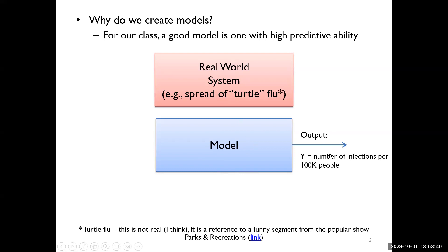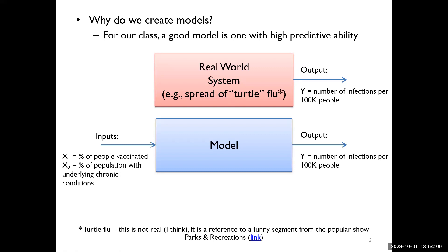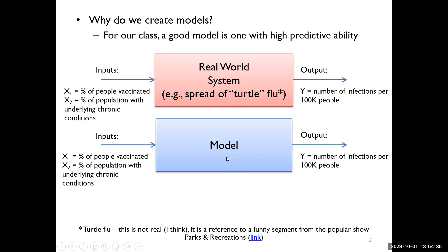In the real world, we can actually measure this — we can get data on the number of infections per 100,000 people or the infection rate. Then we can use our model to figure out what parameters affect that output. For example, X1 might be the percentage of people who are vaccinated, and X2 could be the percentage of the population with underlying chronic conditions. The argument is that these two parameters affect the number of infections per 100,000 people. These X variables are our inputs, and the output variable Y — the dependent variable — is the number of infections per 100,000 people. Our model tries to predict Y based on any value of X1 and X2. If we know what X1 and X2 are in the real world, we can replicate this in the model and see what our model tells us.